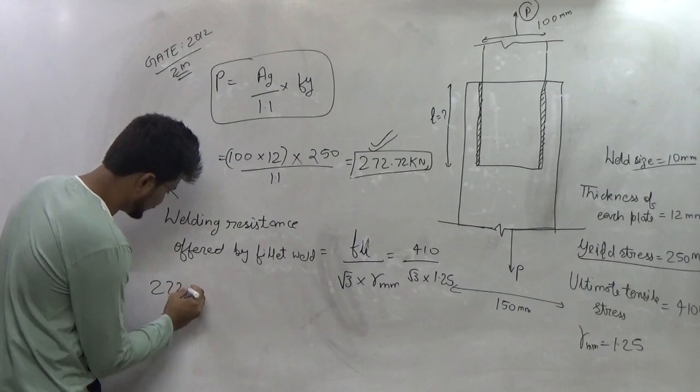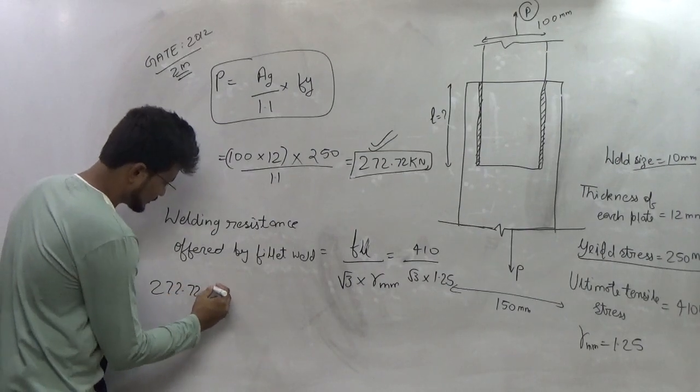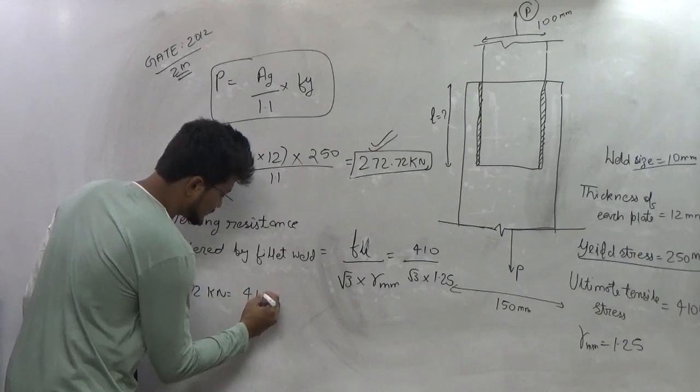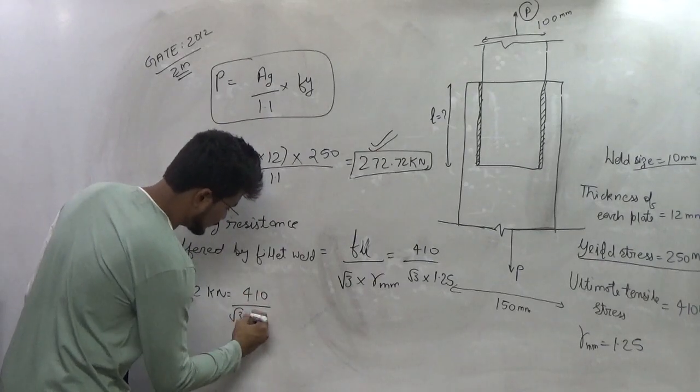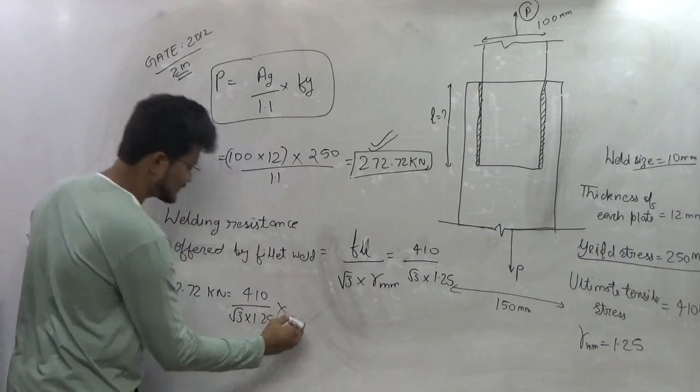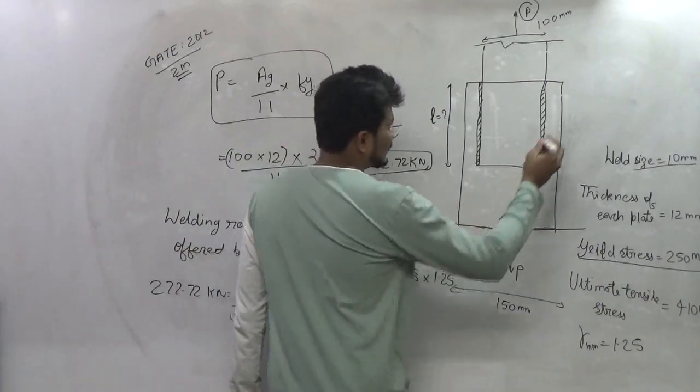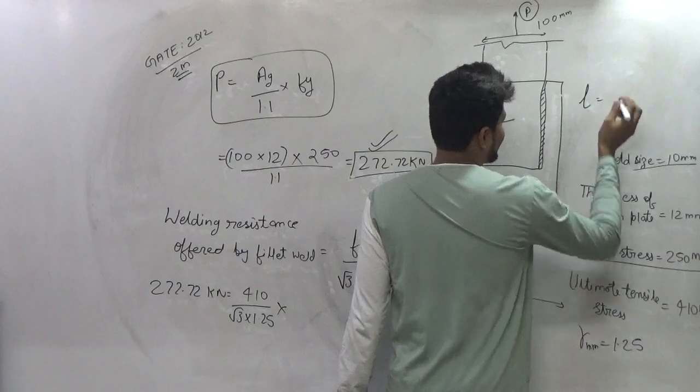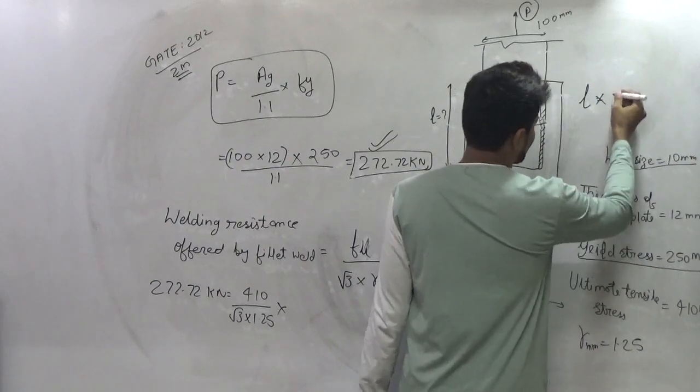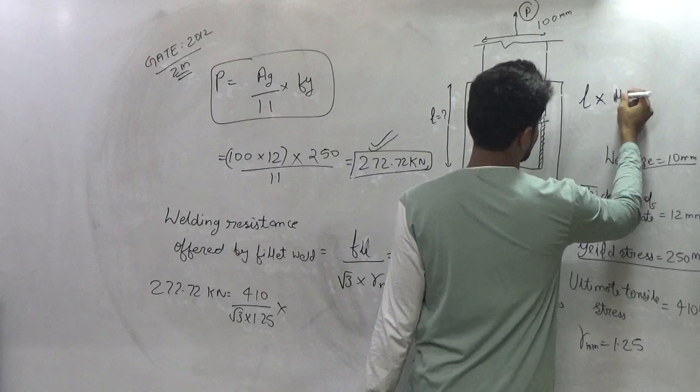So therefore 272.72 kN will be equal to 410 divided by root 3 into 1.25. This is the stress multiplied by the area. Now area will be equal to length of the weld, length of the weld multiplied by the throat thickness.